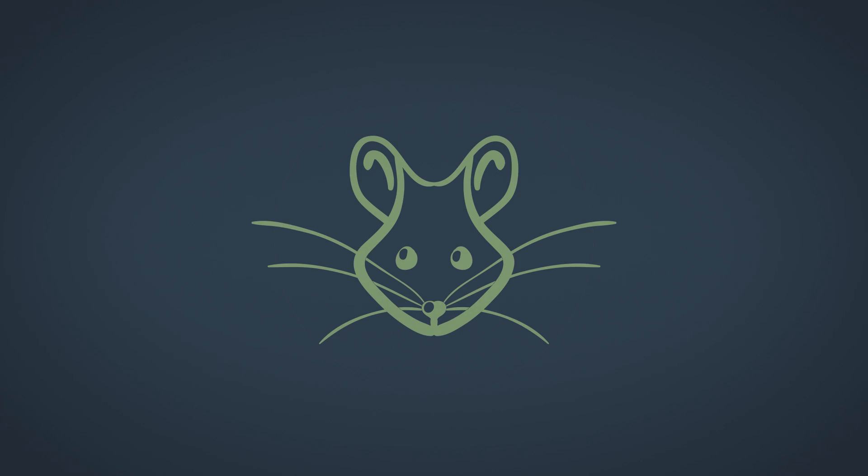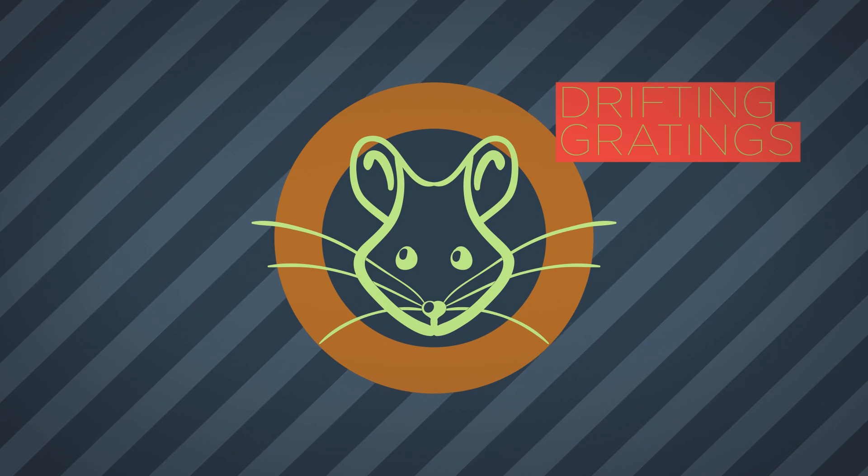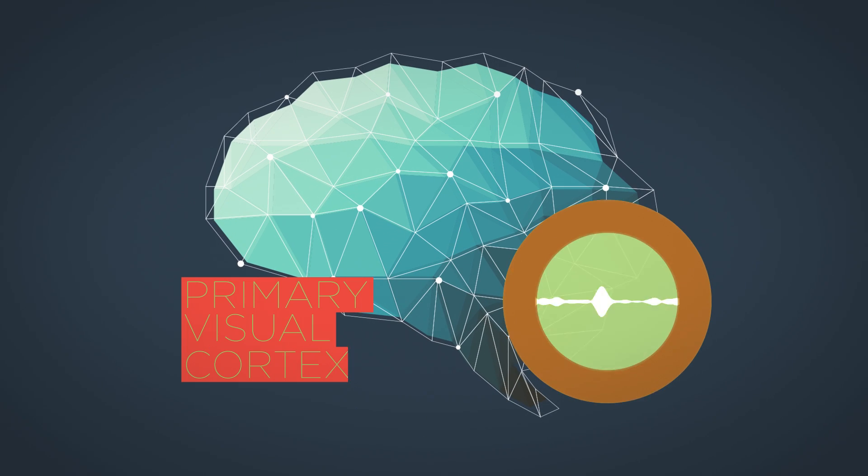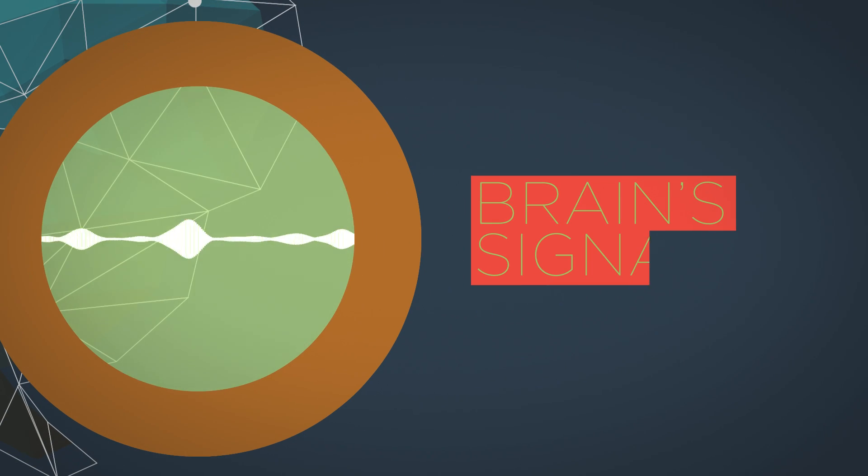To study that, we performed the same experiments, but now the mouse is viewing drifting gratings. This activates the cells in the primary visual cortex. You could say that this is the brain's signal.